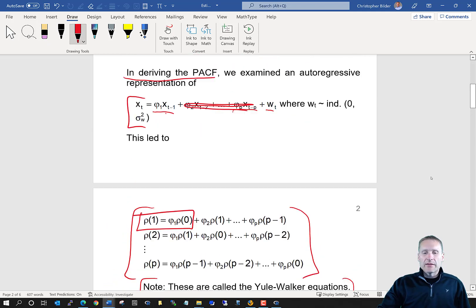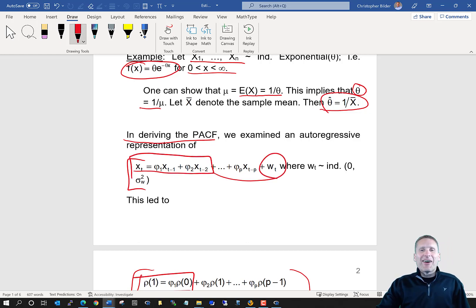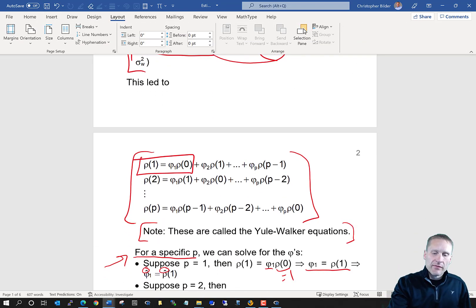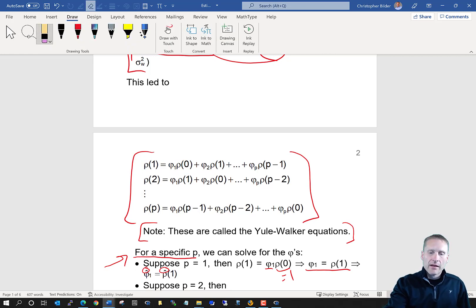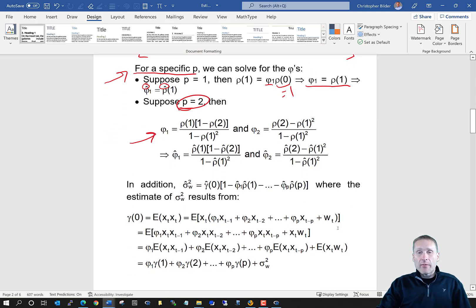So how would we estimate then in a model that has just p equal one? How would we estimate phi of one? Well, just put hats on top of the corresponding values. And what that means then is that we calculate the sample autocorrelation at lag one, and this would be equal to phi hat one. If p is equal to two, then we would be looking at the first two equations, and that's all we need to estimate phi one and phi two. So how do we come up with phi hat one, phi hat two? Well, just simply put hats on top of all the sample autocorrelations.